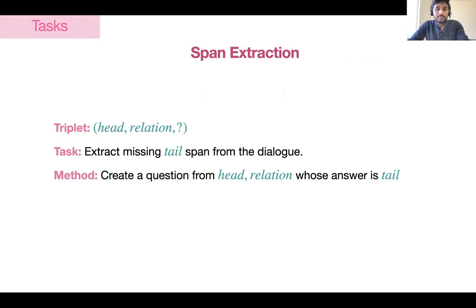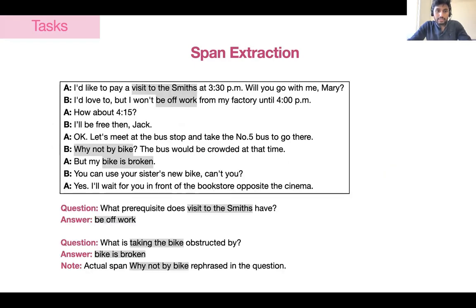The second task is span extraction, where the first two elements of the triplet — the head and the relation — are given, and the objective is to extract the tail span from the dialogue. We formulate this as a SQuAD-style question answering task where the question is created from the head and the relation, and the answer is the tail to be predicted from the dialogue. The question is created using templates depending upon the specific relation type, and the answer is extracted from the dialogue.